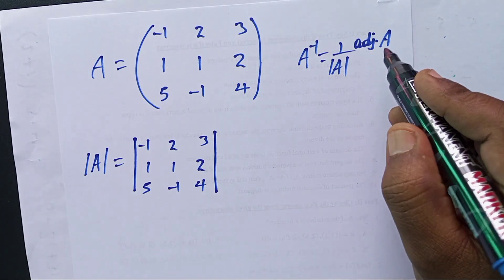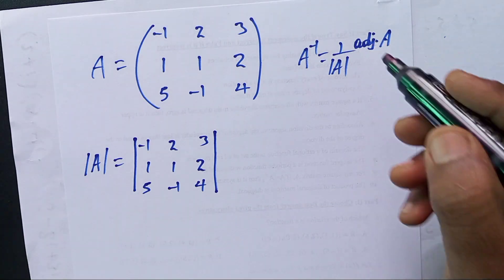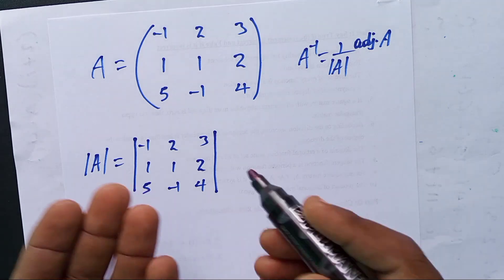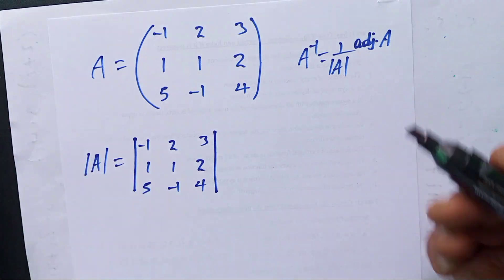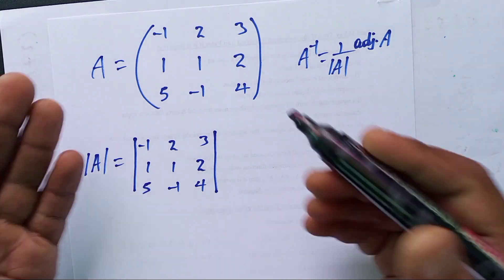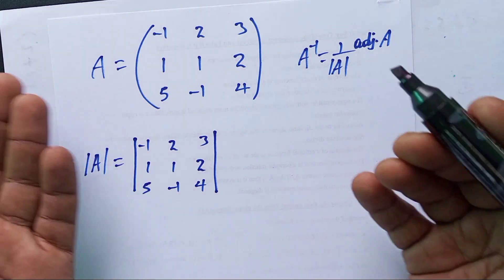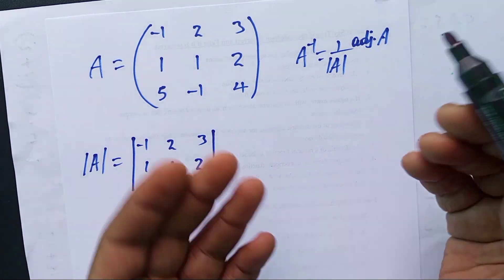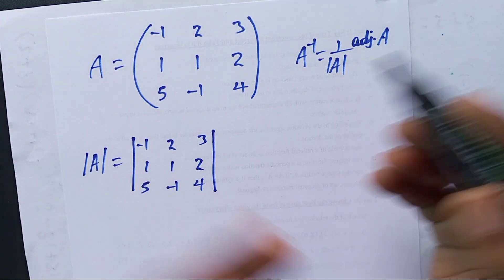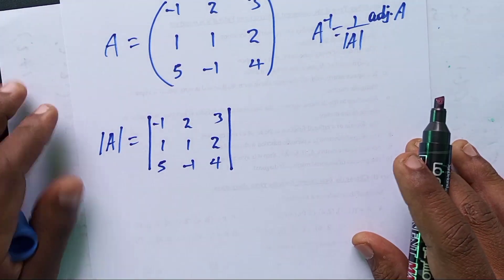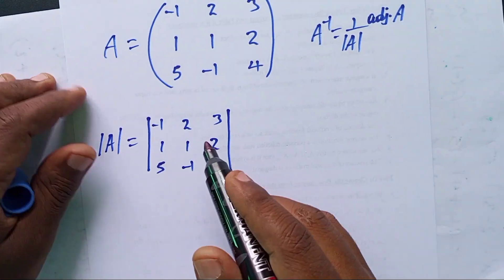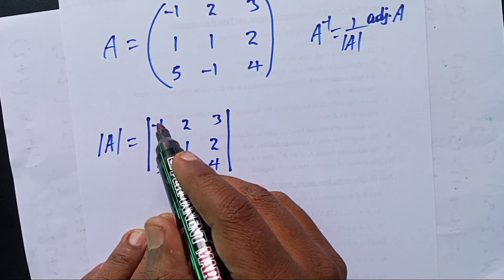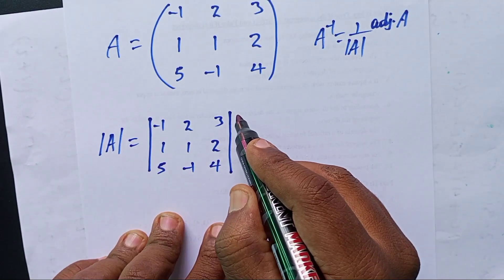The adjoint of a matrix is the transpose of the cofactor matrix. We will now find the inverse of a 3 by 3 matrix. First we need the adjoint, then we need the determinant.